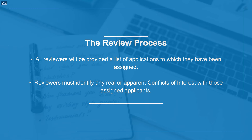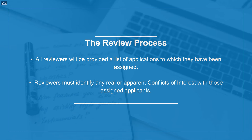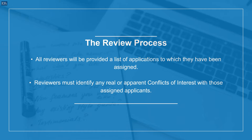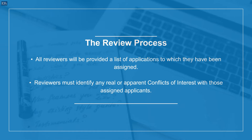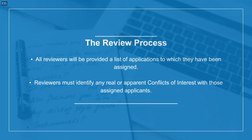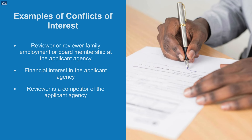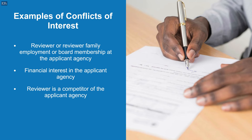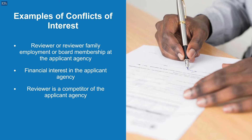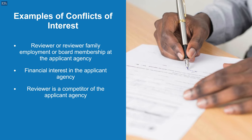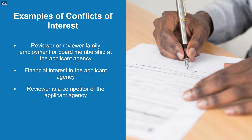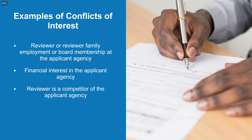The review process. All reviewers will be provided a list of applications to which they have been assigned. Reviewers must identify any real or apparent conflicts of interest with those assigned applicants. Examples of conflicts of interest include: a reviewer or reviewer family employment or board membership at the applicant agency, a financial interest in the applicant agency, or a reviewer who is a competitor of the applicant agency.